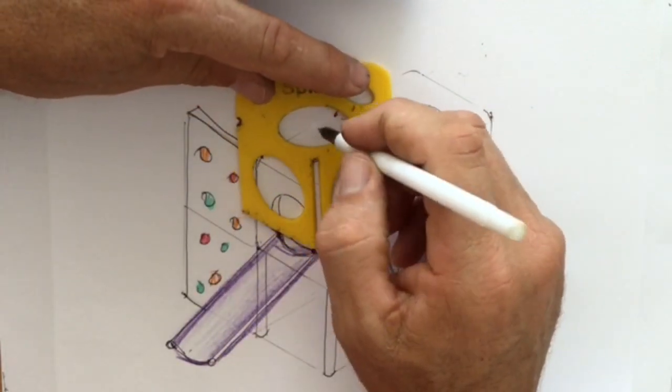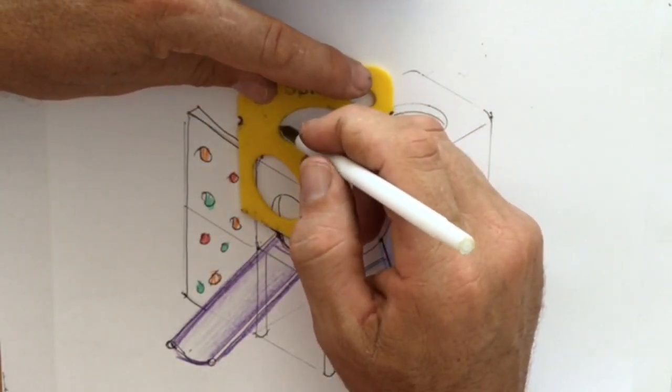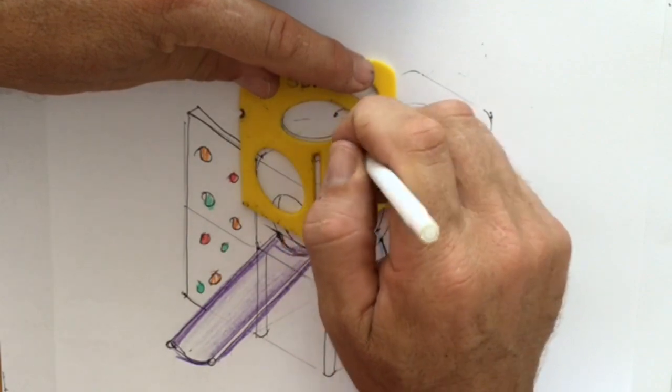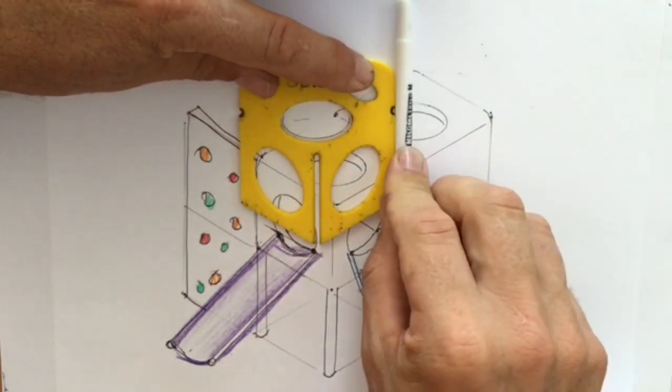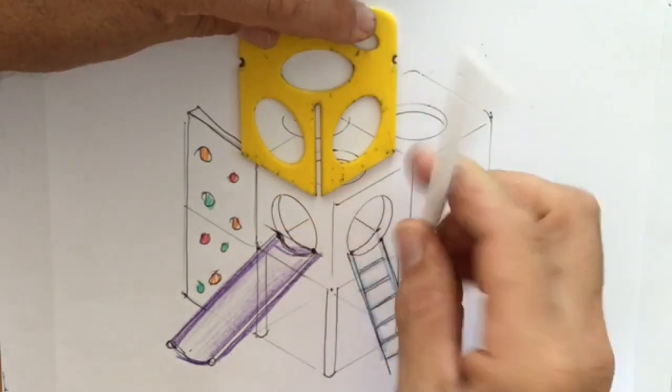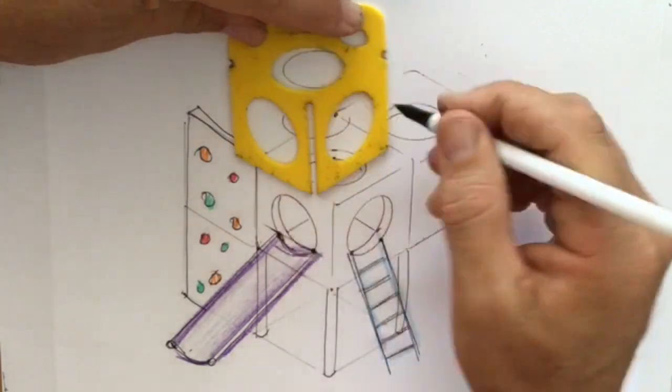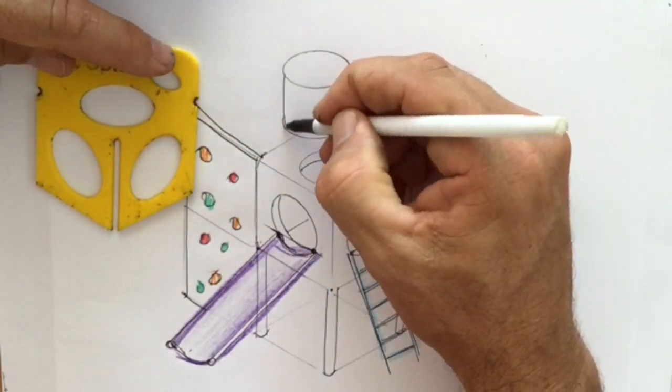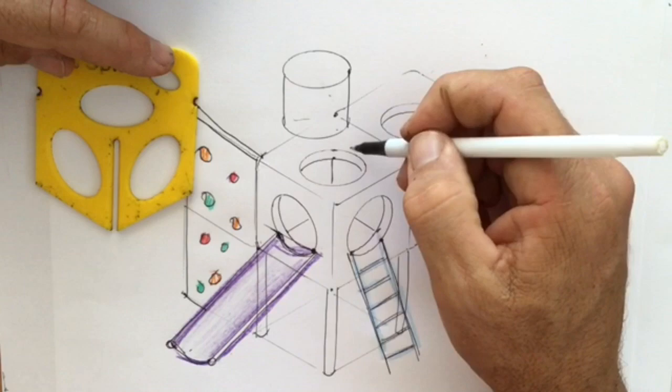Let's add a cylinder here. Since this is the bottom of the cylinder, I'm going to draw the bottom half of the cylinder. Now I'm going to slide it upwards. And draw the whole ellipse. Let's connect those. So you can see I've got a cylinder sitting on top of the cube.